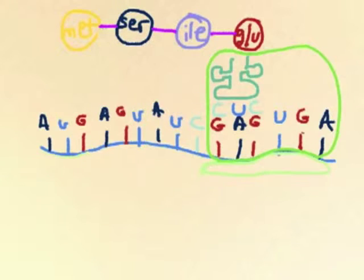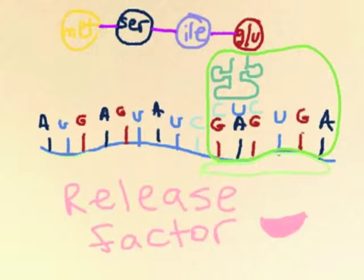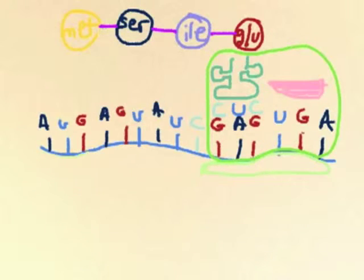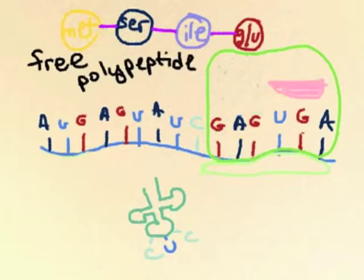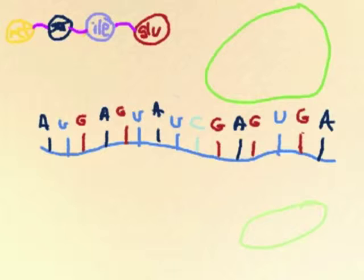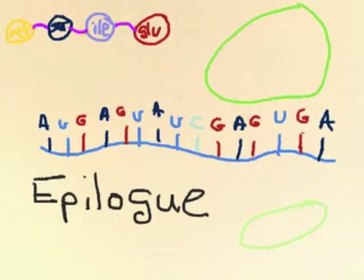Once the ribosome hits a stop codon, a release factor binds and causes the whole complex to fall apart. The polypeptide is free to fold into a protein, and the ribosome and mRNA are released.